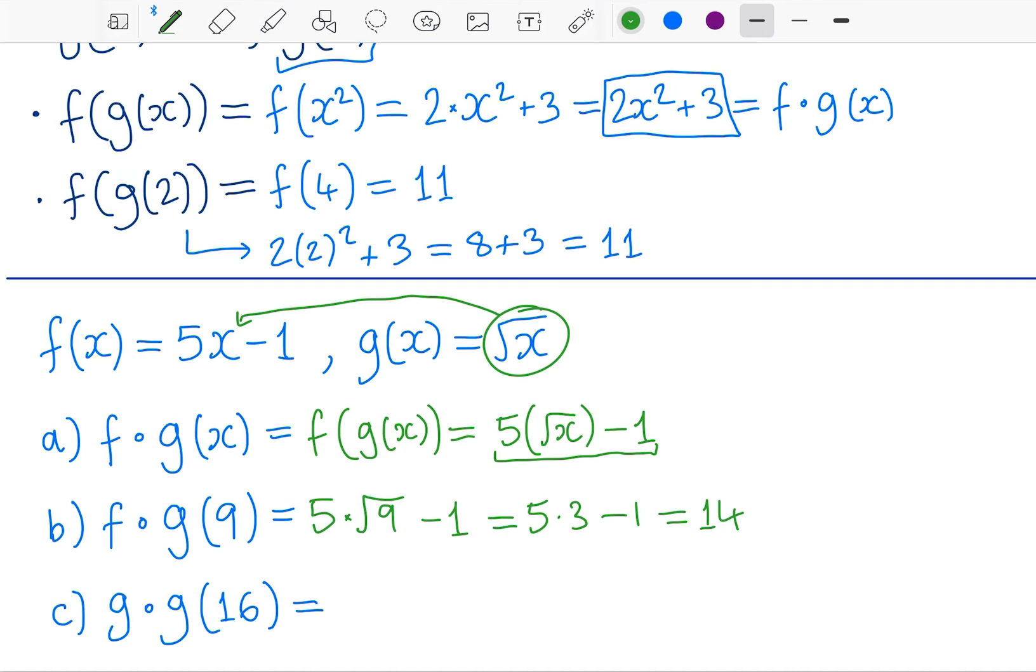And part c is another example. I can also just plug g into itself again. So what this means is I need to do g of g of 16. I could find, well, there's those same two methods again. I could find the final function, plug in g into g, means I do the square root of the square root, which is basically the fourth root. Then I can plug in 16 and then get two. Or I can do g of 16 just on its own, g of 16 is four. I'm going to ignore the negative for now. And then I can do g, the outer function, g of four, which is two. And that's obviously the same answer.